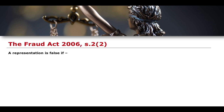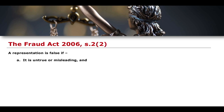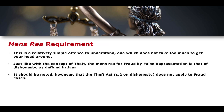In addition to dishonesty, there is also an intentionality requirement. There must be an intention by making the false representation to gain for himself or another, or to cause another or to expose another to a risk of loss. So the mens rea requirements for section 2 include, first, dishonesty as defined by Ivey and subsequently by Barton, and second, this intentionality requirement — making a false representation with the intent to gain or to cause loss or to expose another to a risk of loss.